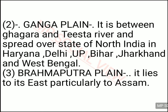The second is the Ganga Plain, formed by the river Ganga and its tributaries, found between the Ghagra and Tista rivers. It mostly covers northern India and many states like Haryana, Delhi, Uttar Pradesh, Bihar, Jharkhand, and West Bengal. The third is the Brahmaputra Plain, also called the Assam Plain, mostly found in Assam state in the eastern part of our northern plain. Some parts of it are also in Bangladesh because Brahmaputra flows into Bangladesh after covering India.